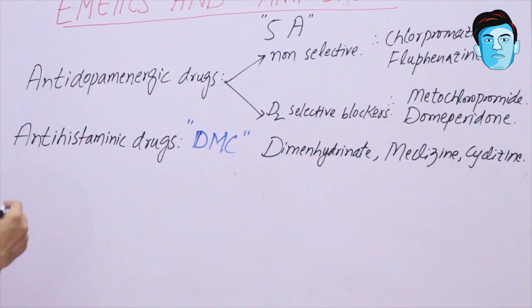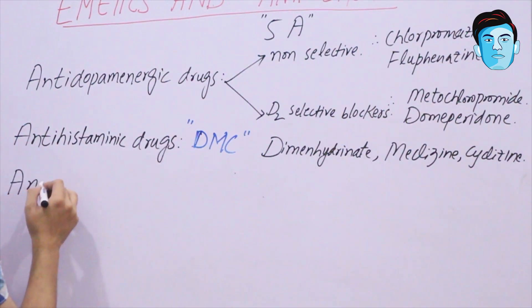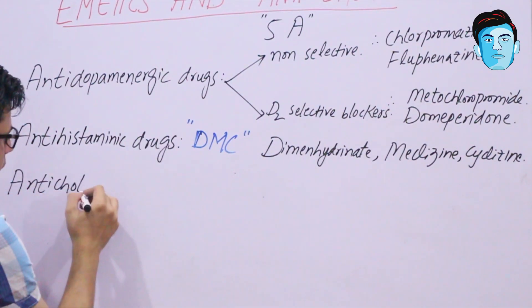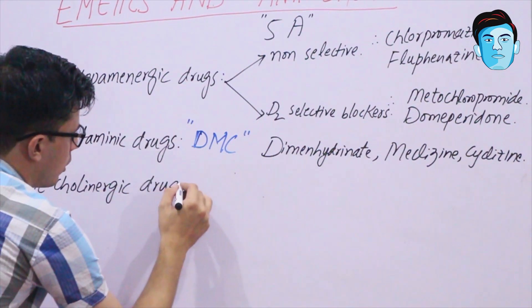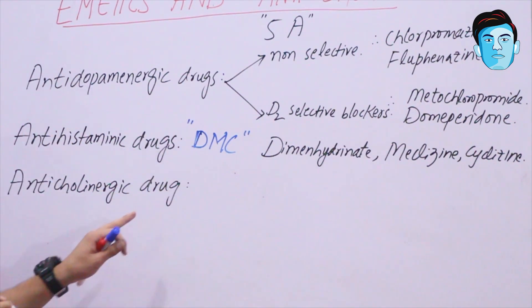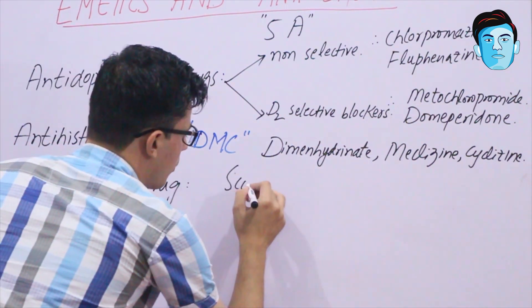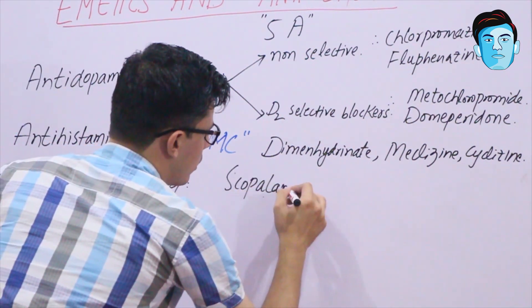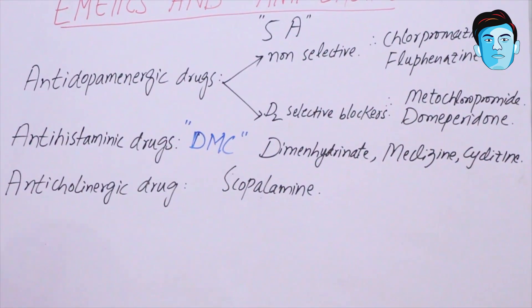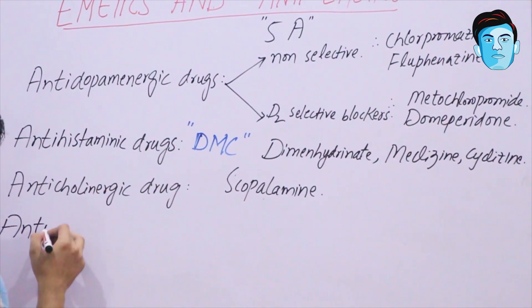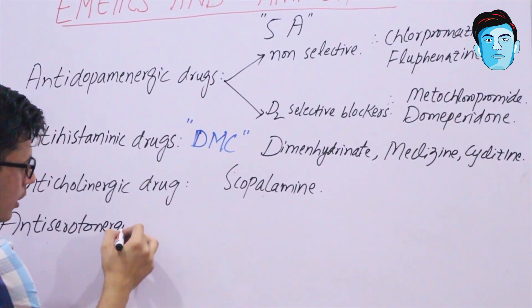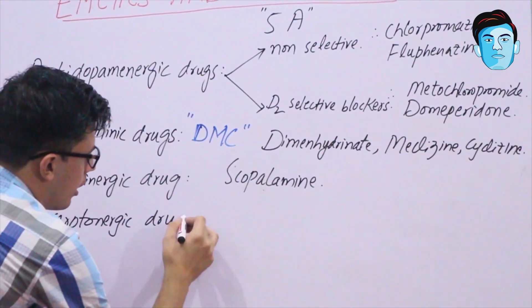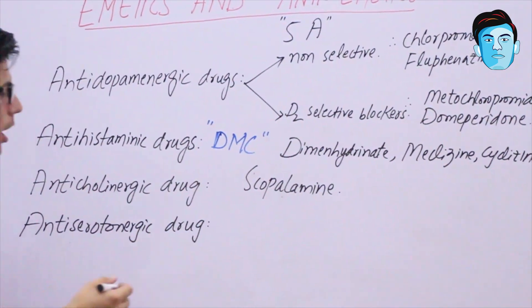The third A stands for anticholinergic drugs. Under this class, we have scopolamine.